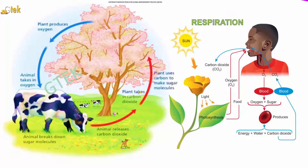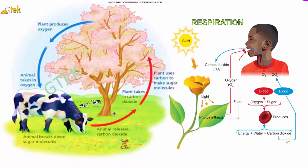For humans, the same scenario happens. The intake of oxygen occurs, and carbon dioxide is released. Carbon dioxide is used by plants via photosynthesis to produce oxygen and food. The food is taken by the human and oxygen is used in respiration. In the blood, oxygen combines with sugar from food to produce energy, water, and carbon dioxide. This carbon dioxide is released through the blood vessels out to the atmosphere. This is the process of respiration.